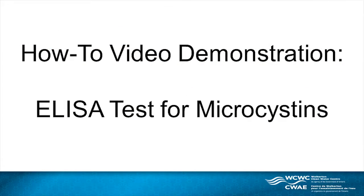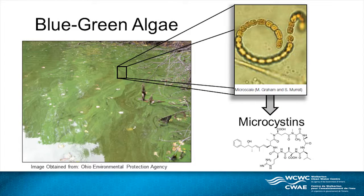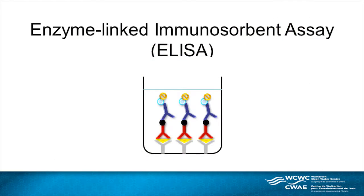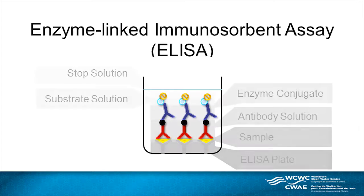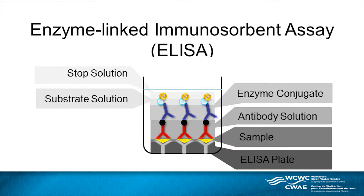This video will demonstrate how to measure microcystins as a screening method. Microcystins are a type of toxin that can be produced by certain blue-green algae. The method uses an enzyme-linked immunosorbent assay known as ELISA.